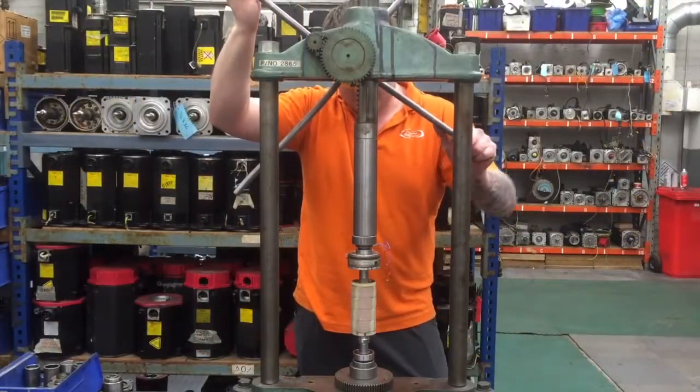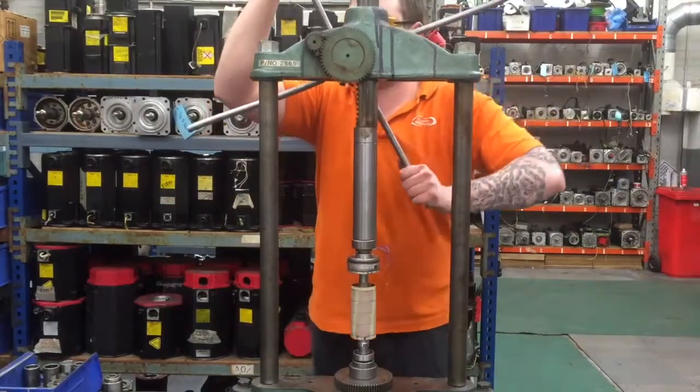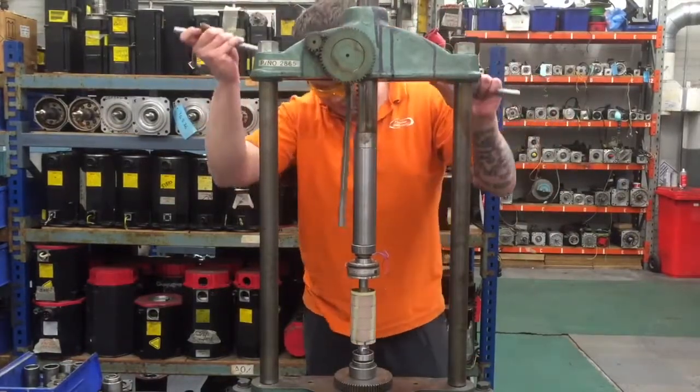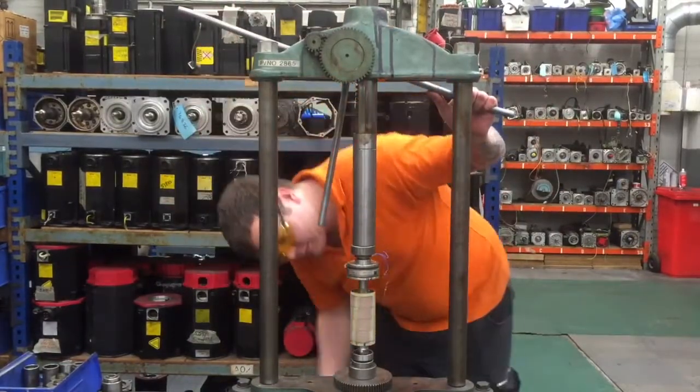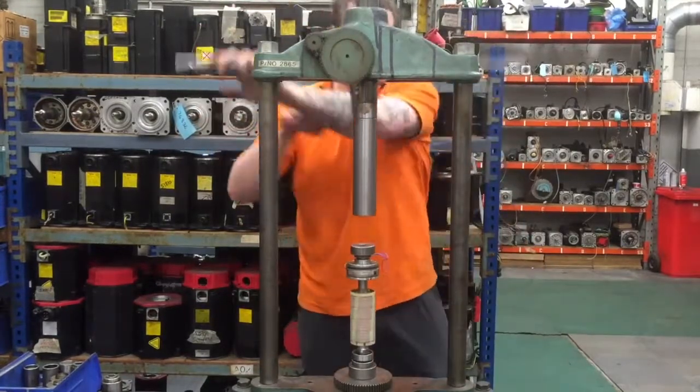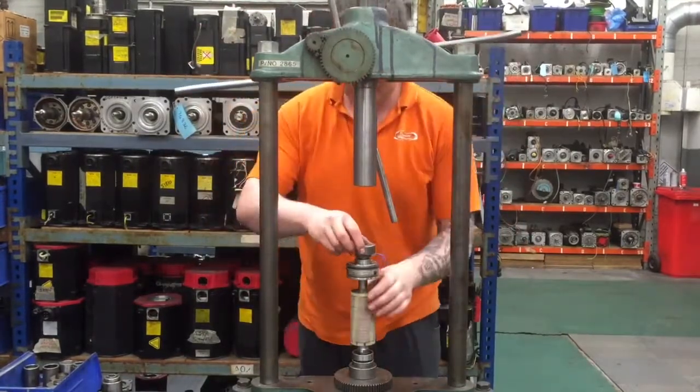We will fit the drive end bearing now again using the same cold pressing method with the fitments on the inner race of the bearing to press down against the shoulder. Once we are happy with this, we will then remove the rotor and we will build the motor up ready for testing.